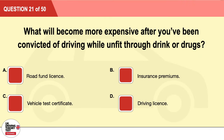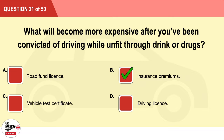Question 21: What will become more expensive after you've been convicted of driving while unfit through drink or drugs? A: Road fund license. B: Insurance premiums. C: Vehicle test certificate. D: Driving license. The correct answer is B: insurance premiums.